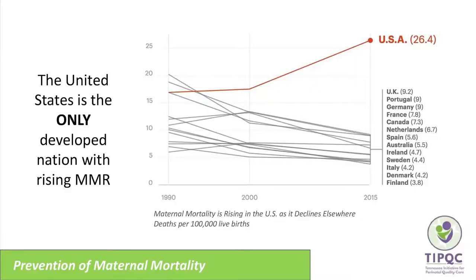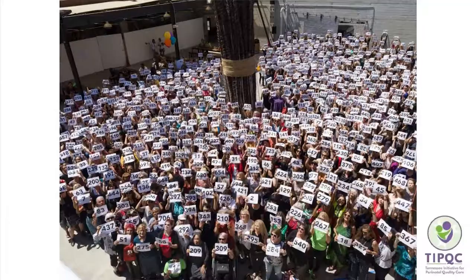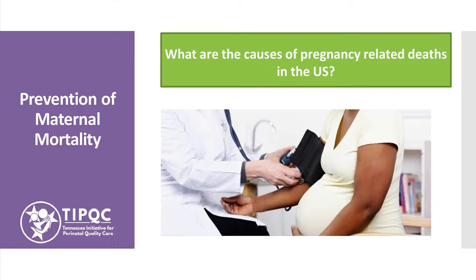A staggering 700 women die each year in the United States as a result of pregnancy complications. When comparing maternal mortality rates in the United States to other developed countries, mortality rates are nearly three times or more than that of other developed countries, as we can see depicted in this graph. The United States is the only developed nation with rising maternal rates annually compared to other countries that have shown a steady decline in rates. In addition, there still remains racial disparities that significantly impact U.S. rates.